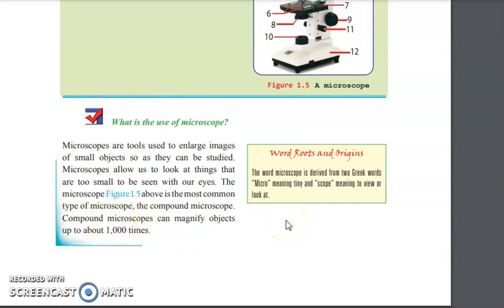Microscope comes from two Greek words: micro means tiny and scope means view or look at. So it basically means looking or viewing at tiny objects.